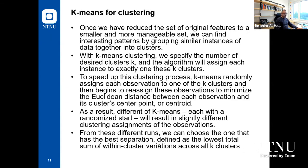K-means clustering is an unsupervised learning algorithm. We specify the desired number of clusters — that's the domain knowledge. If working with coins, K should equal 4. If working with the MNIST dataset, we know by experience we should have 10 clusters. We specify how many clusters, then K-means randomly assigns each observation to one of the K clusters and begins reassigning to minimize Euclidean distance between each observation and its cluster center. We define K centroids by picking K random examples from the dataset as initial centers.